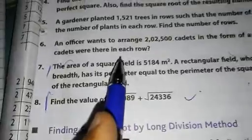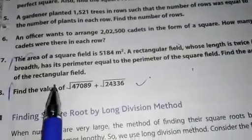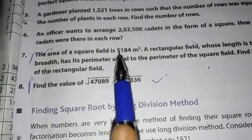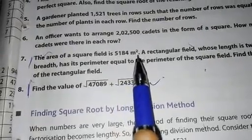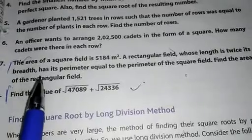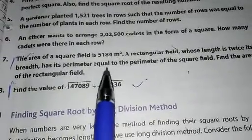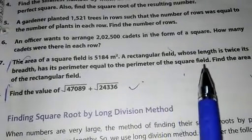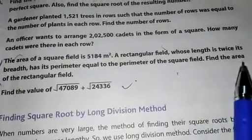Now come to question number 7. The area of a square field is 5184 meter square. A rectangular field whose length is twice its breadth has its perimeter equal to the perimeter of the square field. Find the area of the rectangular field.